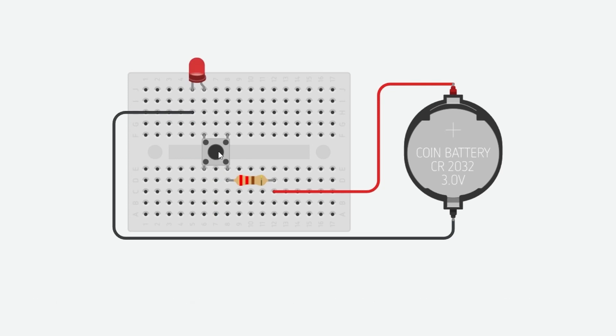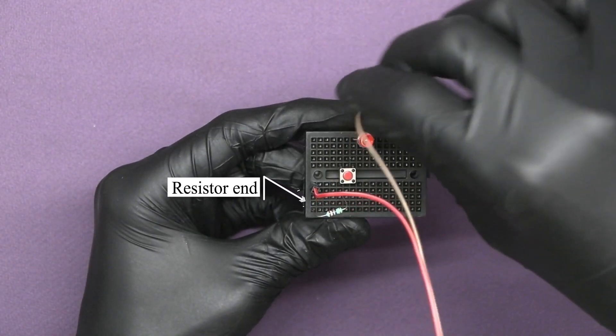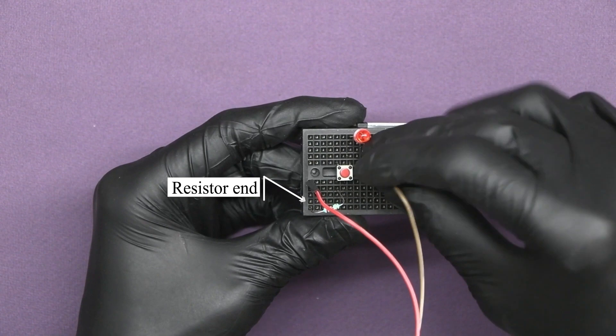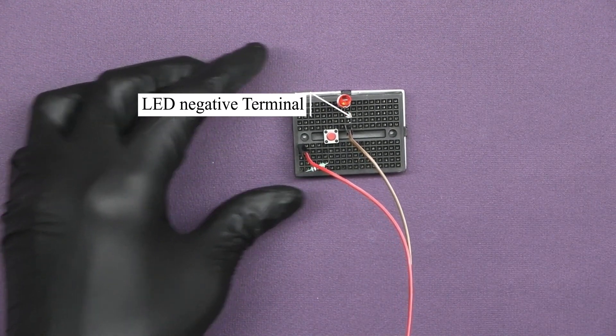Connect the battery supply to the breadboard. Connect the red wire to the resistor's one end and brown wire to the LED negative terminal.